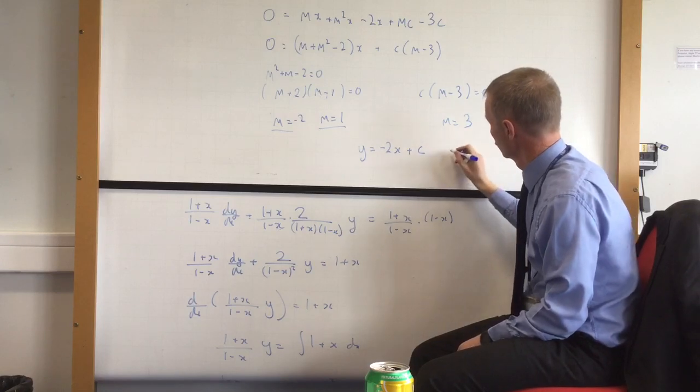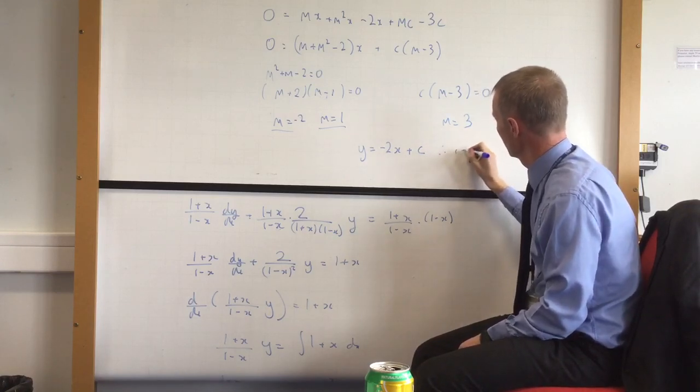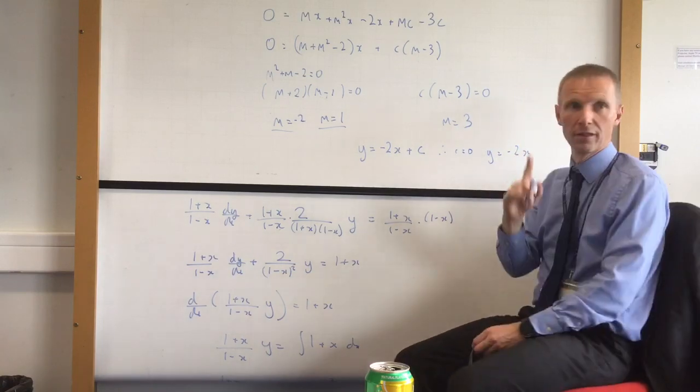Right, so c must be 0. So that means, therefore, c must be 0, so y equals minus 2x. That's one of the lines.